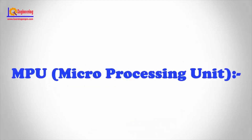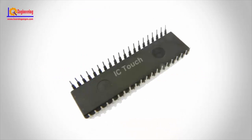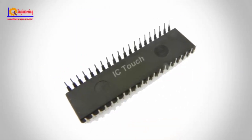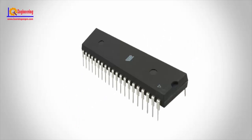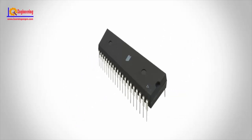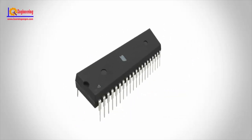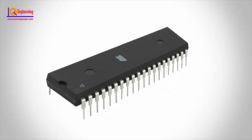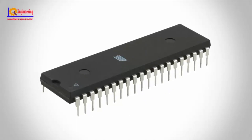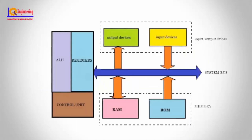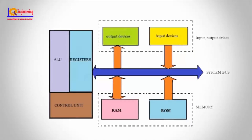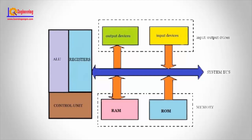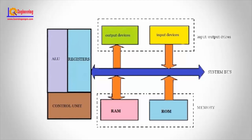MPU means Microprocessing Unit. It is a CPU that fits on a single chip. That's been true for decades, so in fact CPU and MPU are essentially interchangeable. Sometimes within a single system, the design engineer will label the primary processor CPU and various secondary processors MPU.